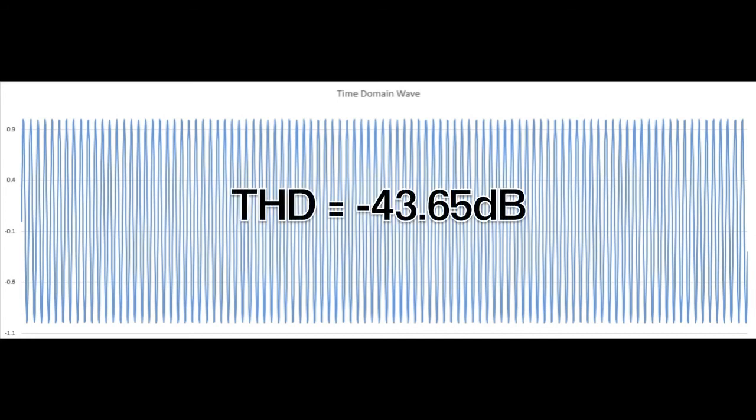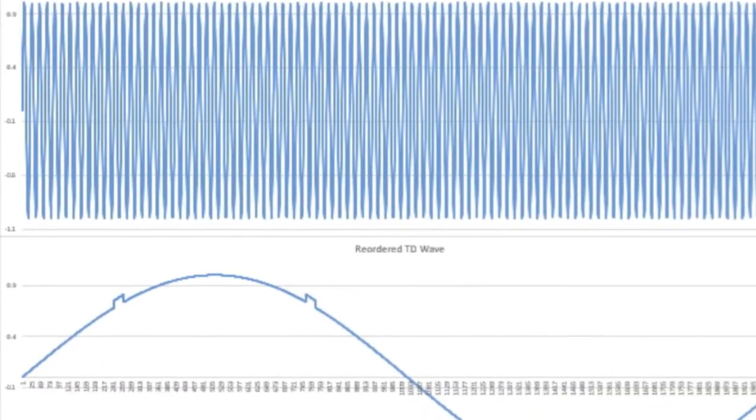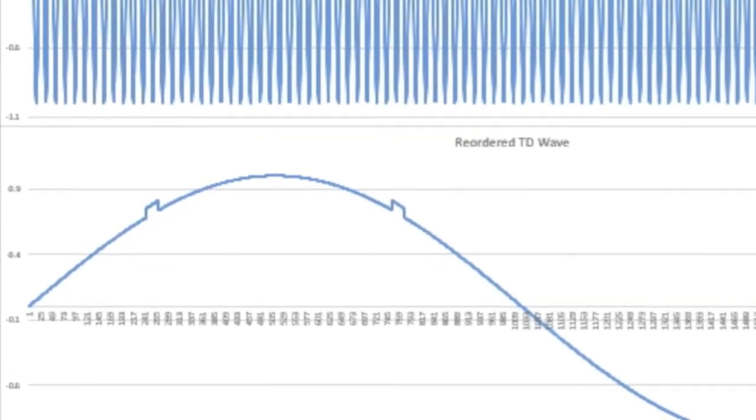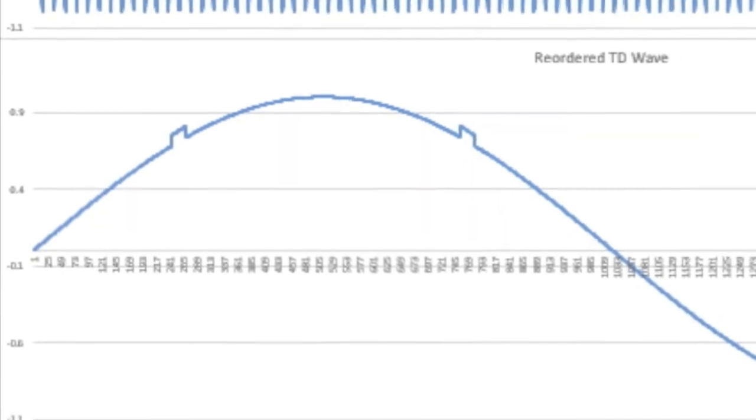So what was the cause of our horrible THD when we started this video? After reordering, the cause is clear. A very bad differential linearity error. But you could have never seen that with one hundred and one cycles of the waveform. But by reordering the wave, we can clearly see the error.